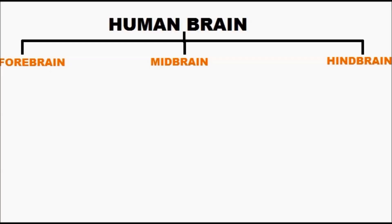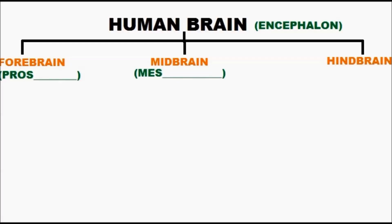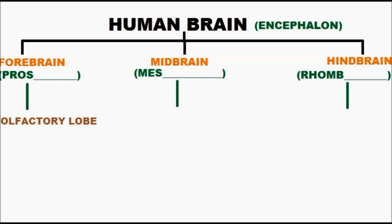The forebrain is the front brain, the midbrain is the mid brain, and the hindbrain is the back brain. The forebrain is called prosencephalon, the midbrain is called mesencephalon, and the hindbrain is called rhombencephalon.